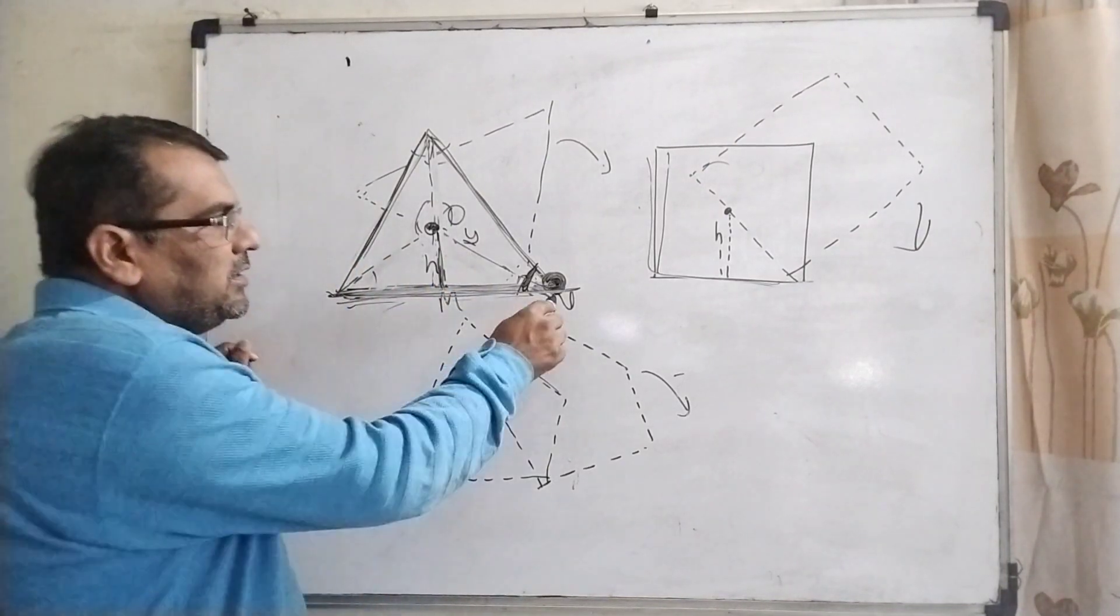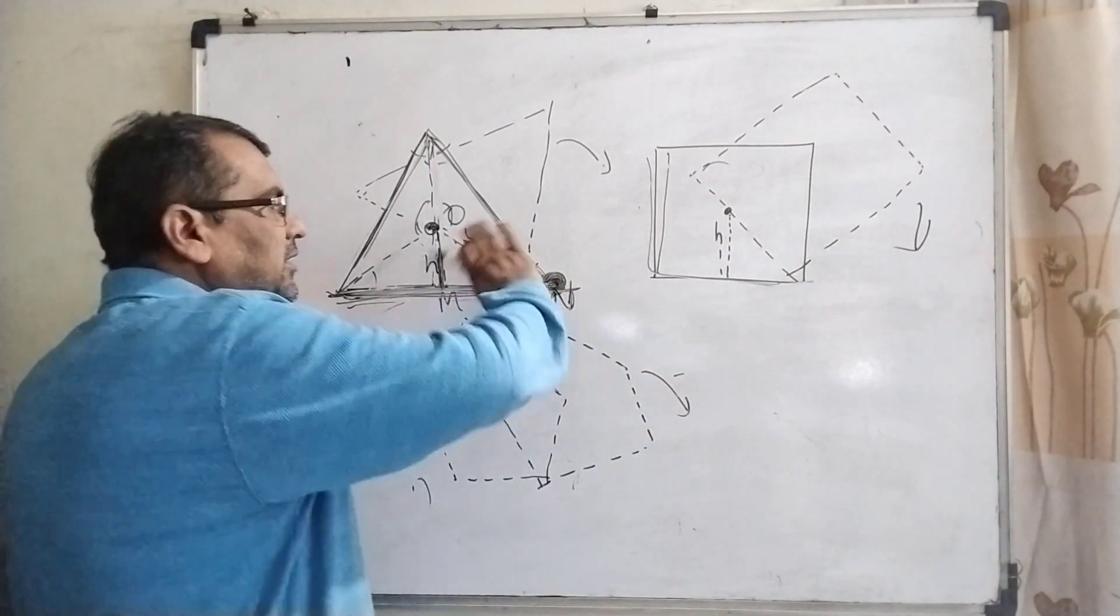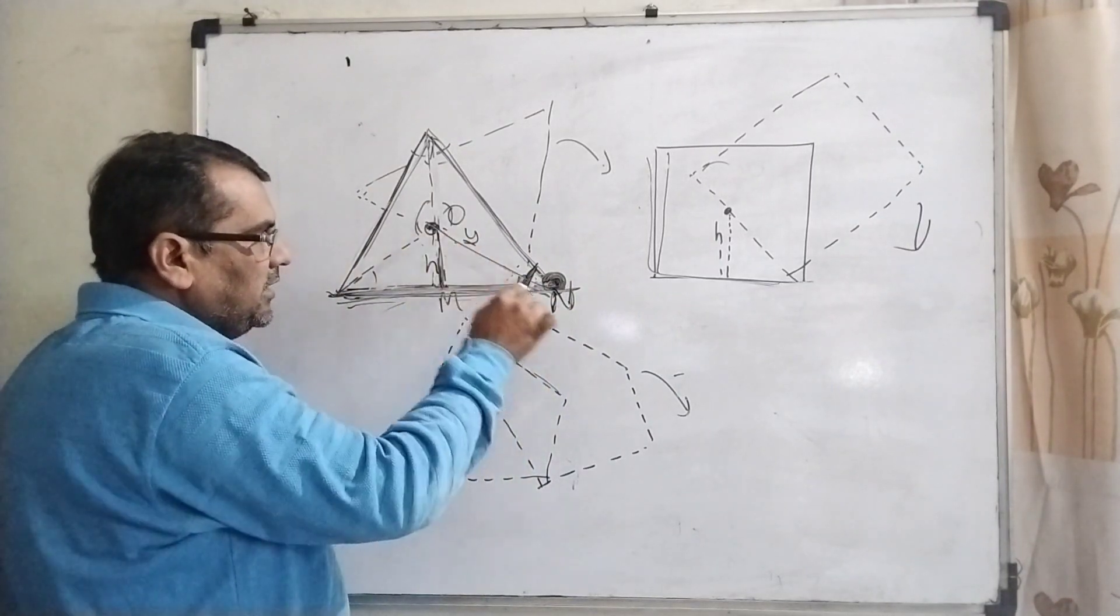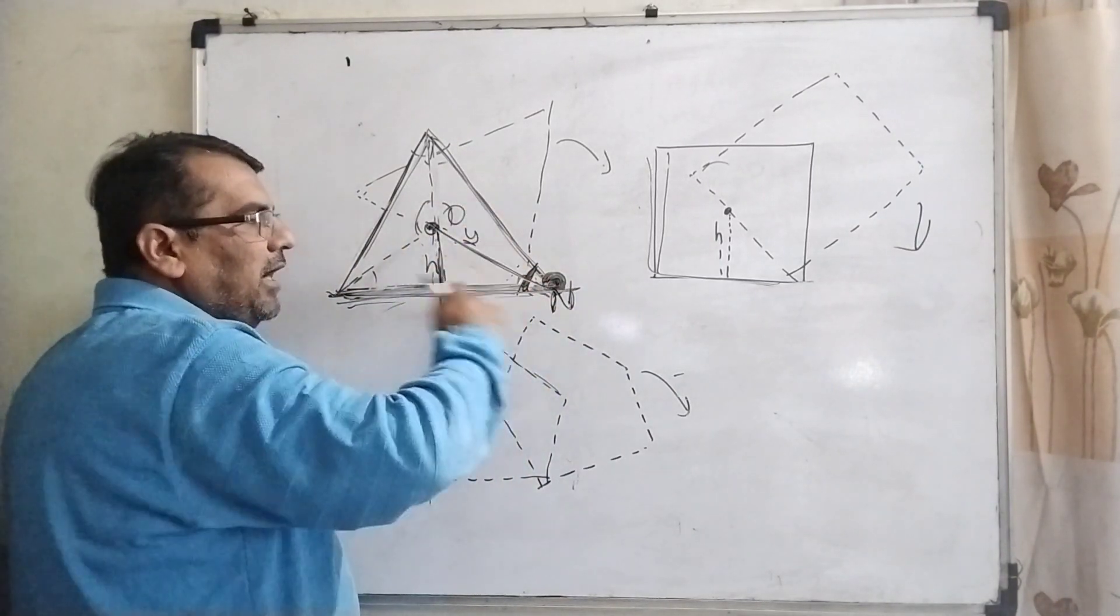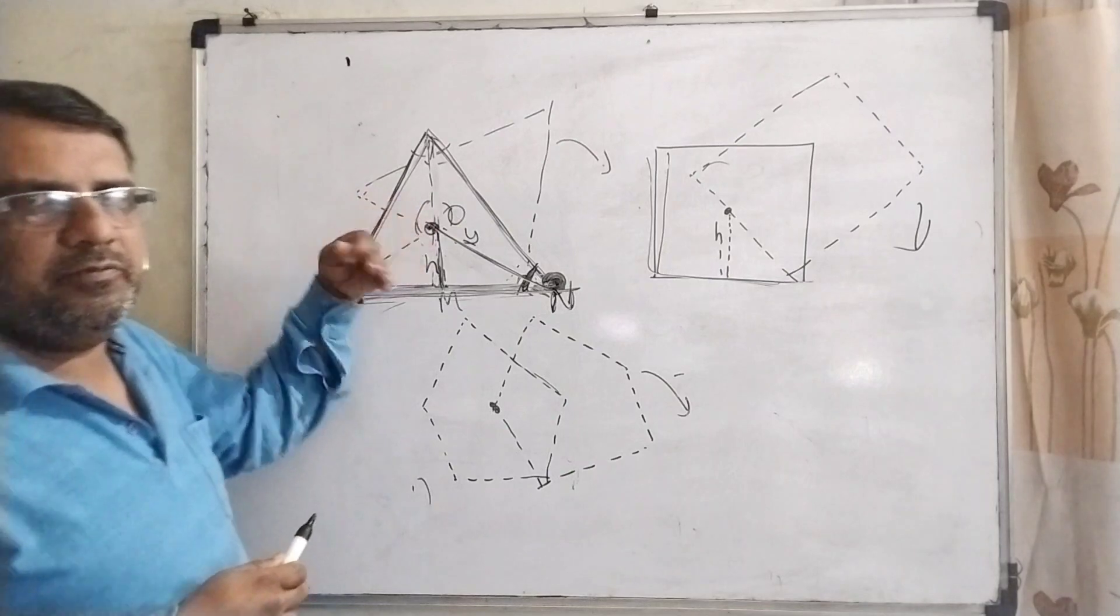Whenever we give some motion, let us consider this n point as a center and that it is moving. Then let us consider this is the radius like that, and the center of mass will be changed at that time.